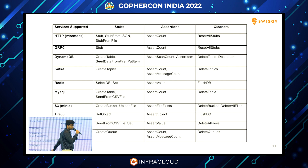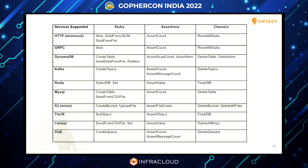This is a list of all the containers currently supported in GRILL — the ones we found most useful in testing microservices within Swiggy. You can see containers like HTTP, gRPC, and Dynamo listed, along with the stub methods, assertions, and cleaners exposed for each of these containers.